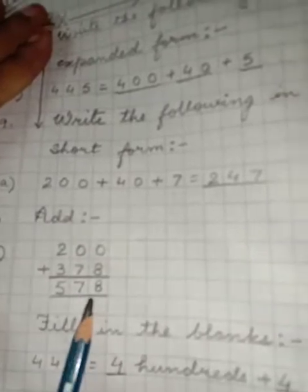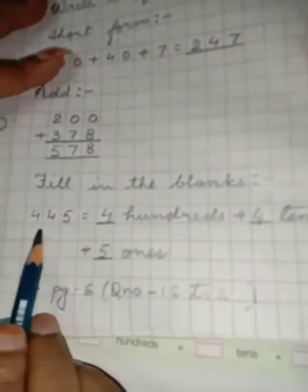Question number 18, write the following in expanded form. So here you see how I have done. 19 is write the following in short form. This is the question, this is the answer. Add. 0 plus 8 is 8. 0 plus 7 is 7. 2 plus 3 is 5. Now question number 21 is fill in the blanks. See, according to the place I have written the answer. 4 hundreds plus 4 tens plus 5 ones.